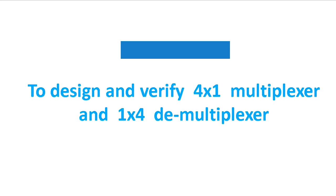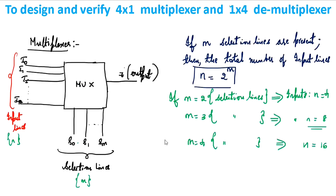We will design a 4-to-1 multiplexer and 1-to-4 demultiplexer. In general, a multiplexer takes n number of inputs, combines them, and gives a single composite output. The inputs are i0, i1, ... iN and the selection lines are s0, s1, ... sN with one output. If m is the number of selection lines, then the total number of input lines is n = 2^m. For example, if m = 2, then the number of inputs n = 4.